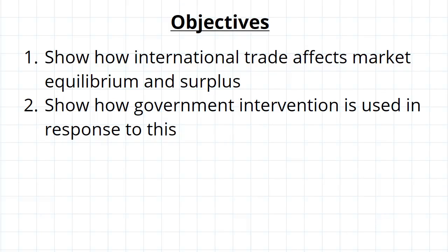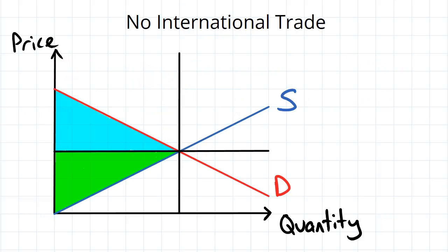G'day guys, now we're going to have a look at international trade, how it affects market equilibrium and surplus, and how the government can respond to it. So if we assume that there is no international trade, there's just domestic producers and consumers.